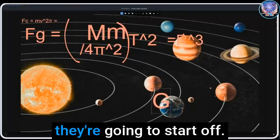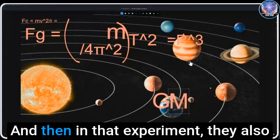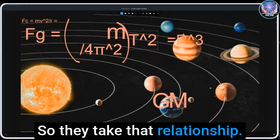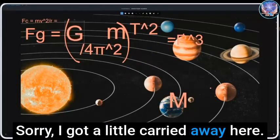They establish a constant for gravity. What they're going to do is start off with earth, how they model out the whole solar system. In that experiment they also derive the constant for m₂. They take that relationship, they take the... oh, by the way, real quick, sorry I got a little carried away here.